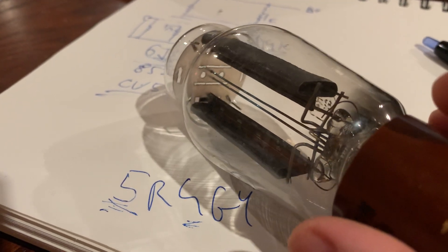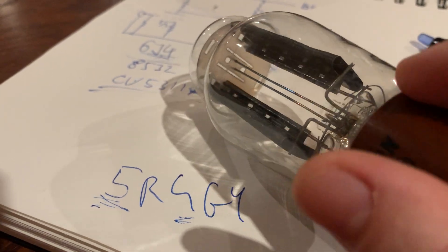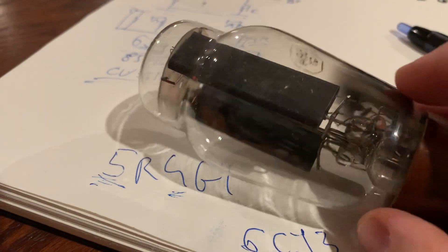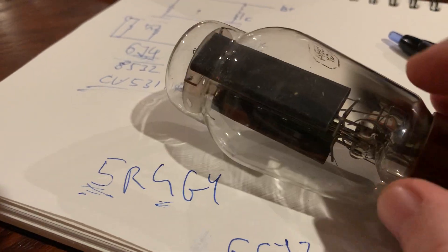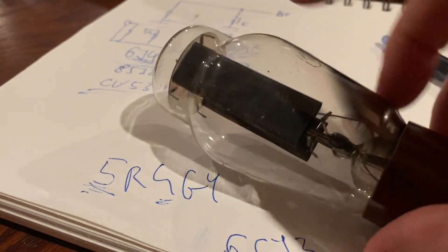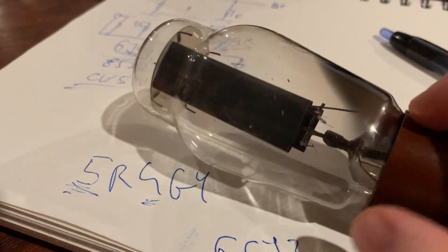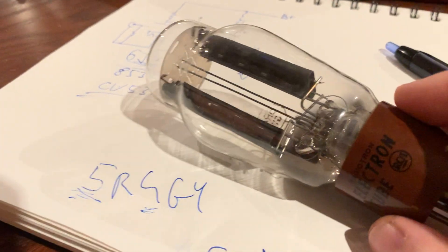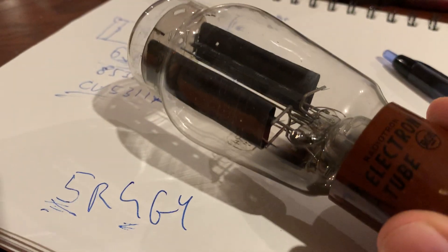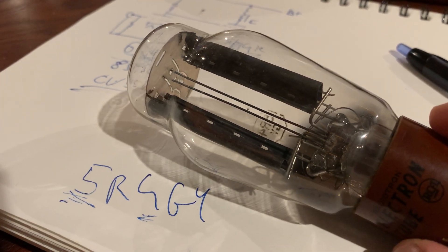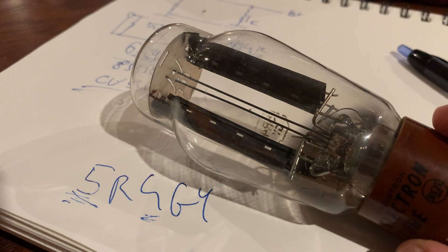It's connected directly to the filament as well. The specialty of this 5R4GY are their extra long plates. Because of those long plates and the internal structure underneath these plates, this rectifier tube is capable of handling very high plate voltages and very high currents.